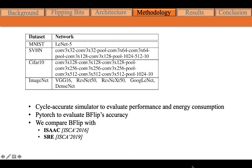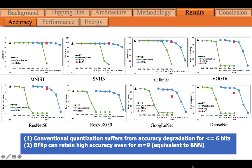B-Flip is compared with ISAAC and SRE for performance and energy evaluation. We tested all benchmarks with different quantization bit widths and B-Flip with a different number of bit matrices sharing the same crossbar. From the figure, we can see that conventional quantization suffers from accuracy degradation when the bit width is less than 6 for most benchmarks, while B-Flip can still retain very high accuracy even when the crossbar is shared by 9 bit matrices — a storage-save ratio equivalent to a binary neural network.